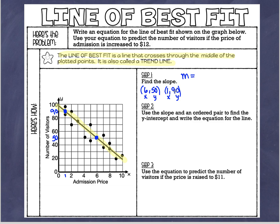Using the slope formula — y minus y over x minus x — I'll go from (1, 90) to (6, 50). On top: 90 minus 50. On bottom: 1 minus 6. That gives me 40 over negative 5, which equals negative 8. That makes perfect sense because my line goes down — there's a negative relationship, so it makes sense that my slope is negative 8.